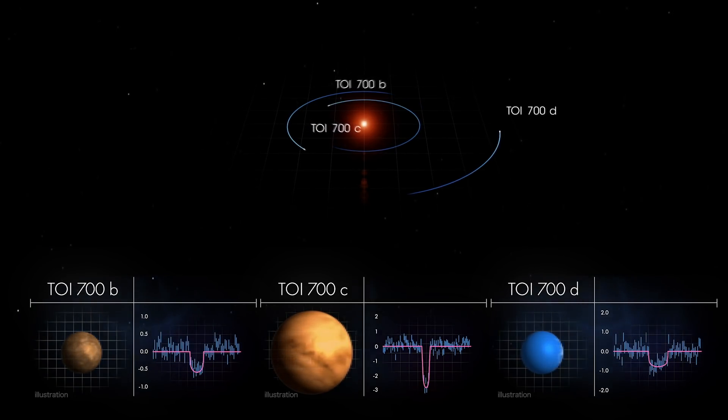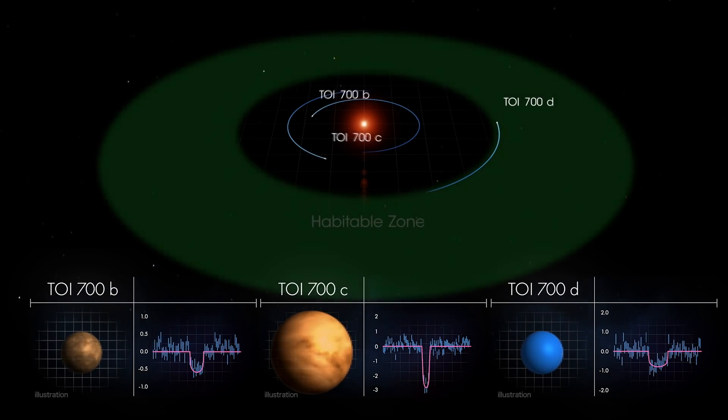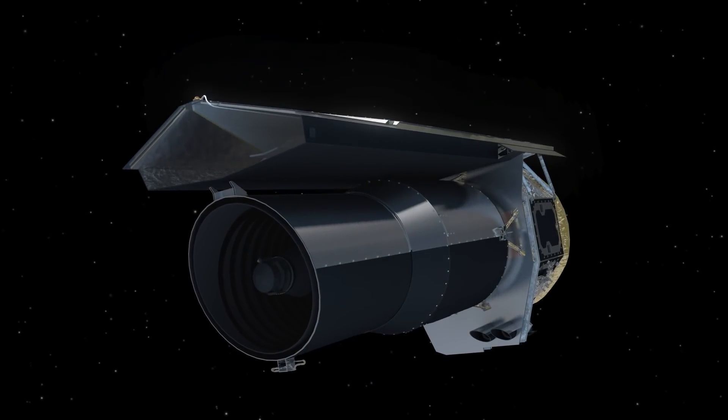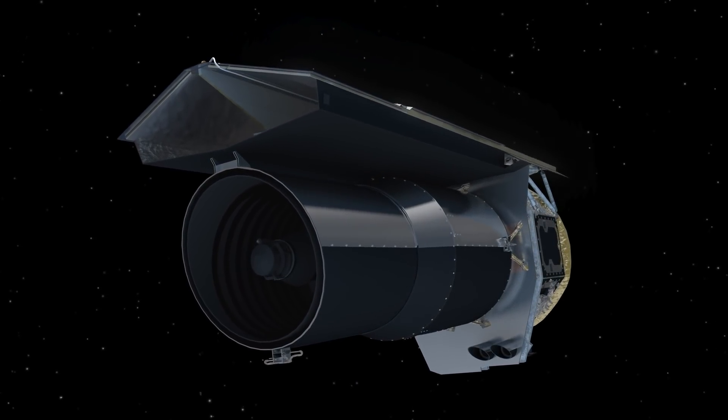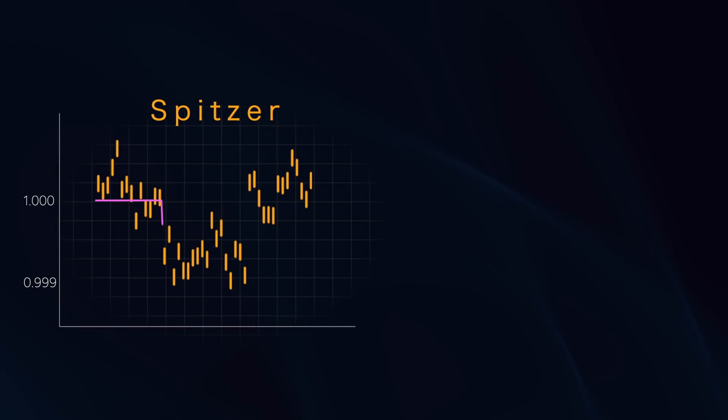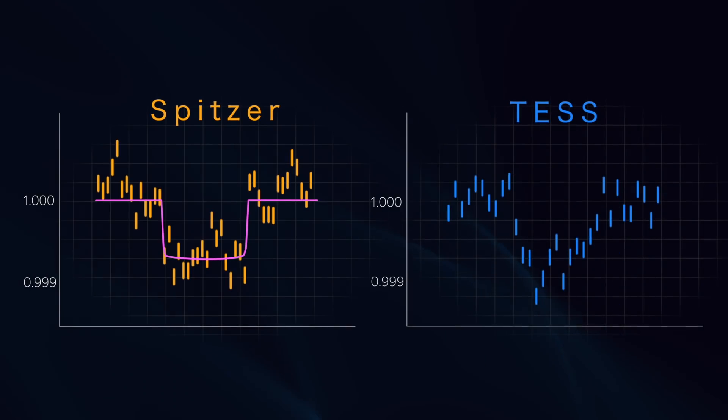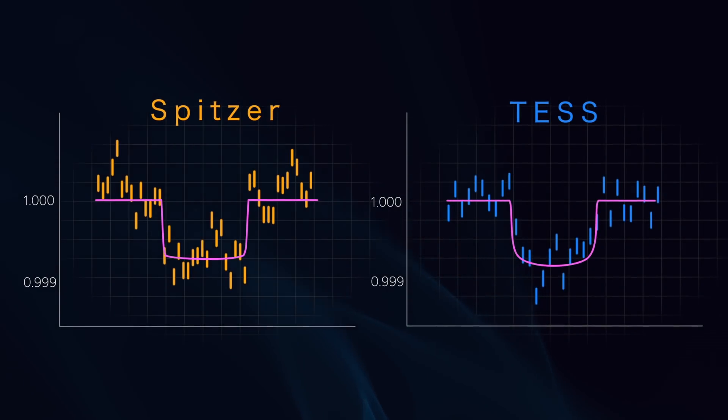But most importantly, TOI-700d is within the star's habitable zone. Scientists wanted independent confirmation of TOI-700d, so they monitored its star with NASA's Spitzer Space Telescope. Spitzer saw a clear transit from the outer planet, affirming its existence and improving scientists' certainty of the planet's size.